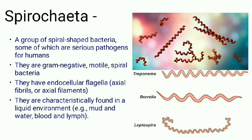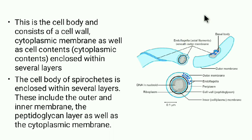Each axial fibril attaches at the opposite end and winds around the cell body, which is enclosed by an envelope. Spirochetes are found in liquid environments such as mud, water, blood, and lymph. The cell body consists of a cell wall, cytoplasmic membrane, as well as cell contents enclosed within several layers, including nucleoid, mesosomes, vacuoles, and ribosomes.